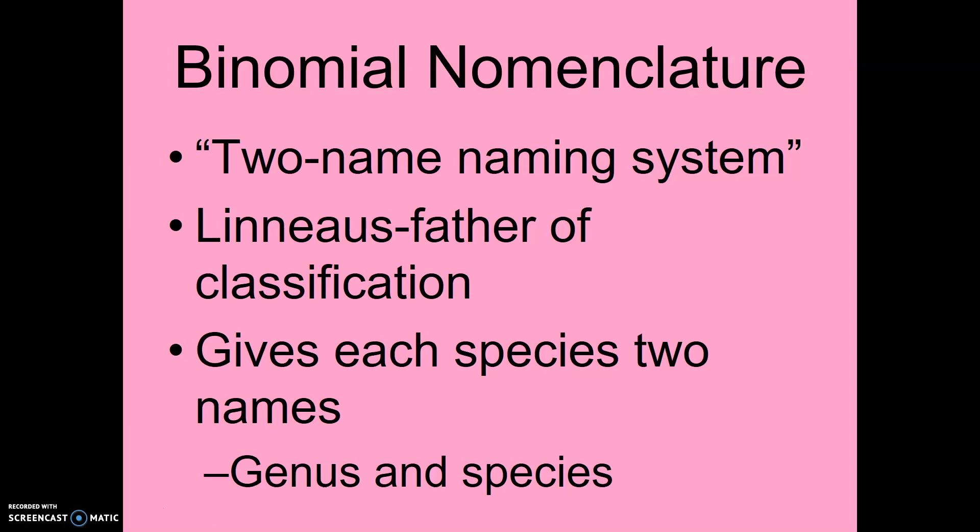Another term to know is binomial nomenclature. Bi means two, nomenclature is naming, so this is a two-name naming system. Linnaeus is considered the father of classification, like Darwin was the father of evolution. In this two-name naming system, we give each species two names — the genus comes first, then the species name.